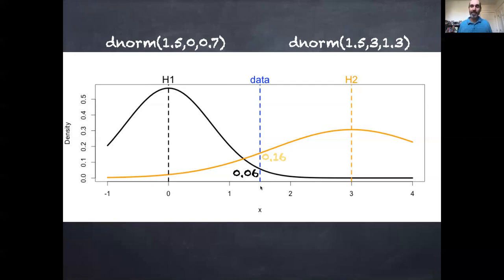Now, there are three possible outcomes. One could be that hypothesis one is more likely, the other could be hypothesis two is more likely, and the other could be that data point 1.5 is exactly in between 0 and 3, so they're equally likely.